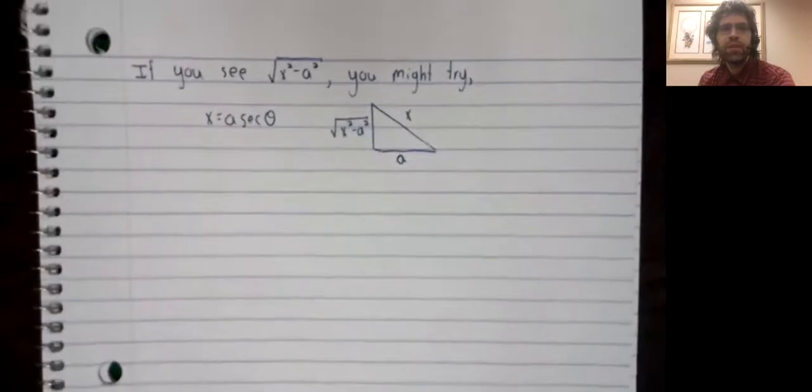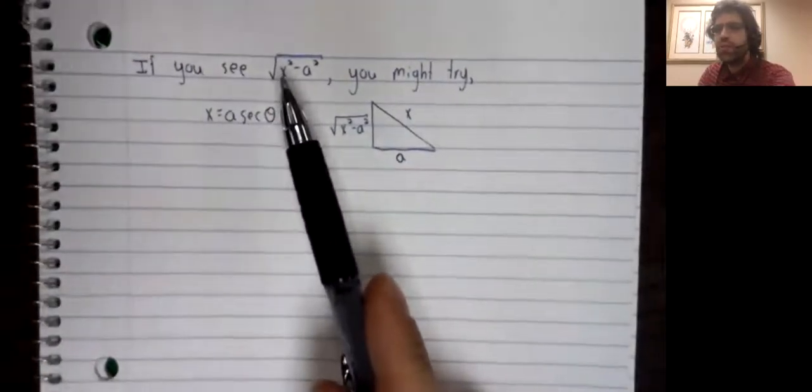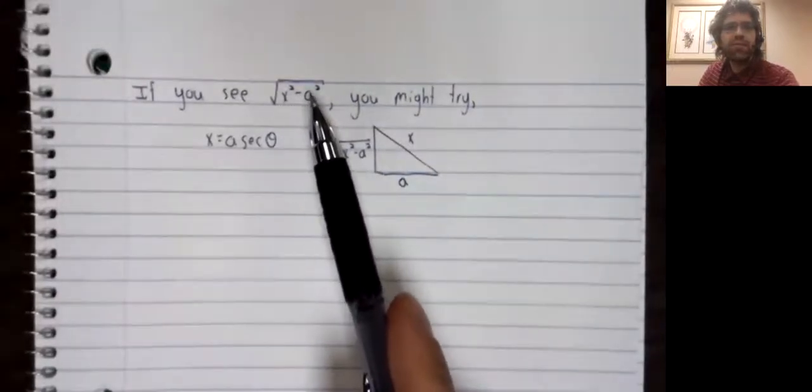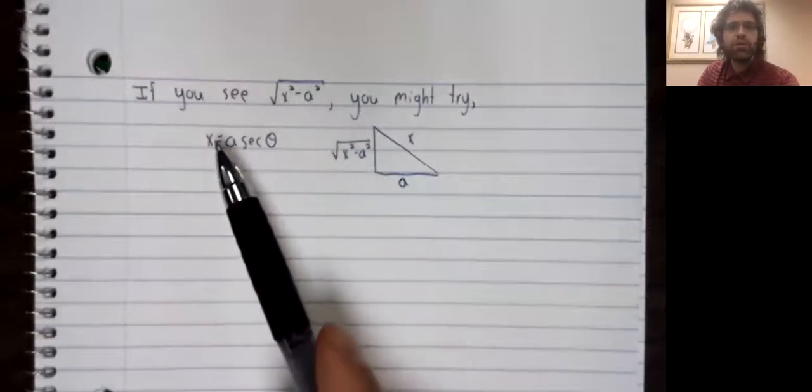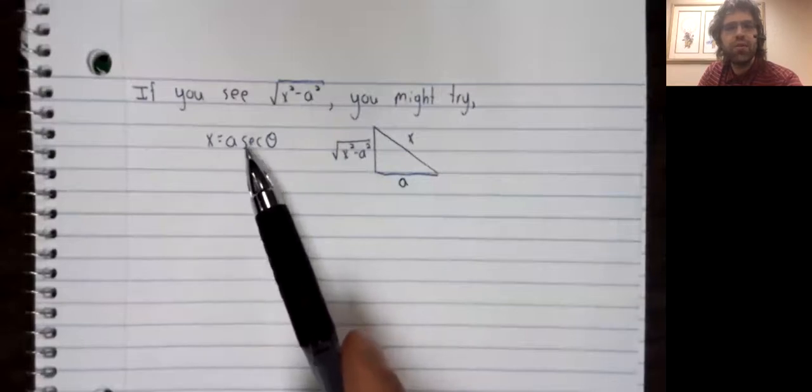Let's present a second trigonometric substitution. Our general guideline is that if you see something that looks like the square root of x squared minus a squared, you might try using the substitution x equals a times the secant of theta.